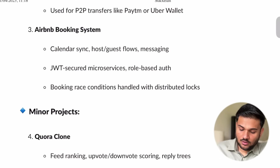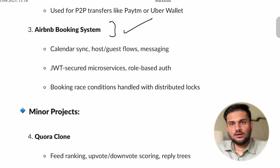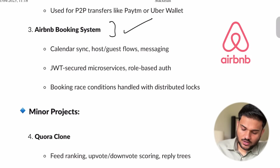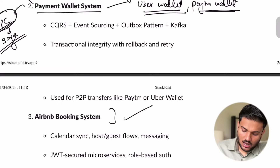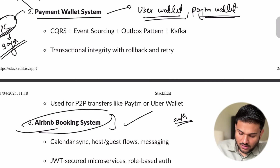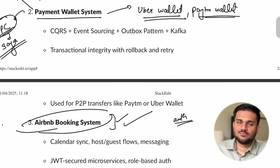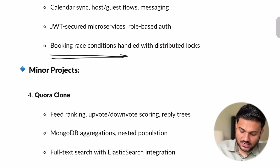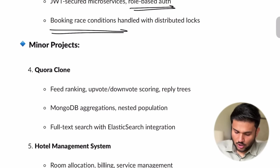Then we are going to talk about another project that is going to be an Airbnb or some kind of a booking system — we are going to see how exactly bookings actually work. We are going to see the auth mechanism working here. We are going to see locking mechanisms — how exactly pessimistic lock, optimistic lock, and distributed locking all work with the Airbnb project. We are going to see how these conditions can be handled, and we are going to see role-based authentication as well.